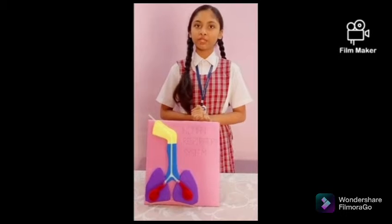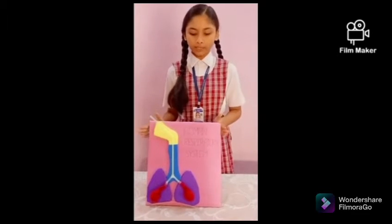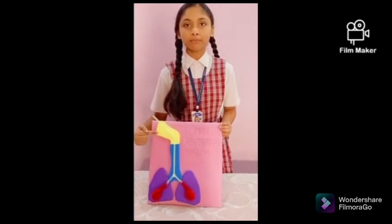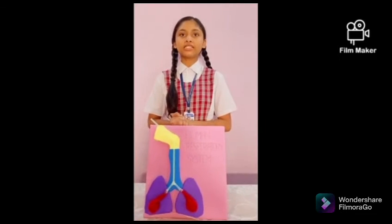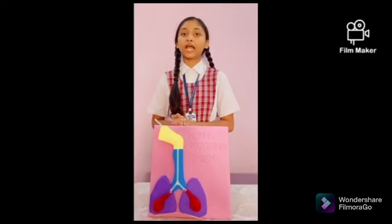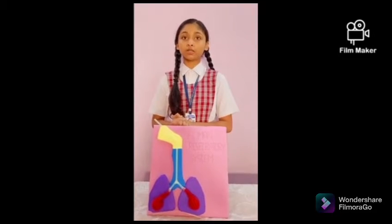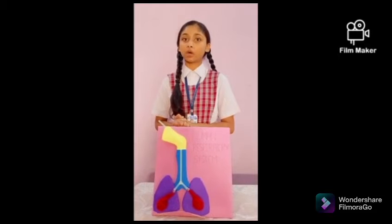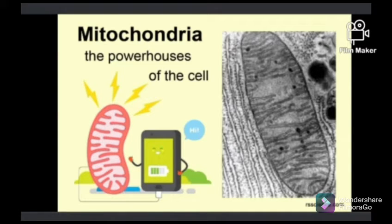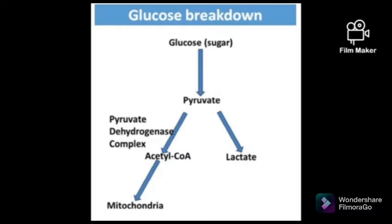Hello everyone, I am Sakshi Priyambada and I am here with my model on the human respiratory system. In this model I have used cardboard, some colorful papers, straws and two balloons. Respiration is the process by which a living being utilizes food to get energy. It is an oxidation reaction in which carbohydrates are oxidized to produce energy. Mitochondria is the site of respiration and the energy released is stored in the form of ATP. The first step of respiration is the breaking down of glucose into pyruvate, which happens in the cytoplasm — a glucose molecule of six carbon atoms is broken down into pyruvic acid of three carbon atoms.